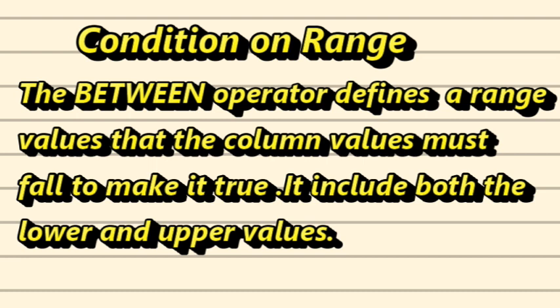The next operator is the BETWEEN operator. The BETWEEN operator is used to define a range of values that a column value must fall within — it uses both a lower value and an upper value, like a lower limit and an upper limit. As you can see on the screen, the query is: SELECT icode, description, and qoh FROM items WHERE qoh BETWEEN 30 AND 50, meaning I have defined the range as 30 to 50.